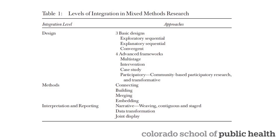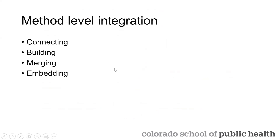Moving on from the design level, which talks about sequencing and ordering, we move to the methods level. Methods really gets at: once we've got that ordering and sequencing with both qualitative and quantitative components, what does that integration actually look like? In doing a deeper dive into method-level integration, we're going to talk about connecting, building, merging, and embedding. I'll define each and give an illustrative example when I have one.